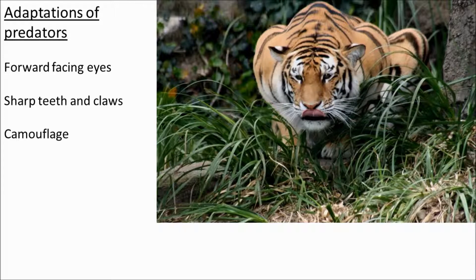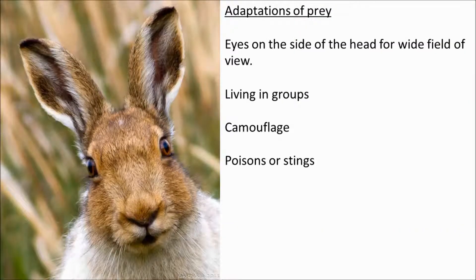Adaptations of prey include eyes on the side of the head, giving them nearly 360-degree vision, making it really difficult to creep up on them. They often live in groups like flocks, herds, or shoals, which makes it difficult for a predator to zero in on one particular creature, and means one or a few can act as a lookout while the others feed. Camouflage helps them stay hidden from predators, and some prey animals have also developed stings or poisons to prevent attacks from predators.